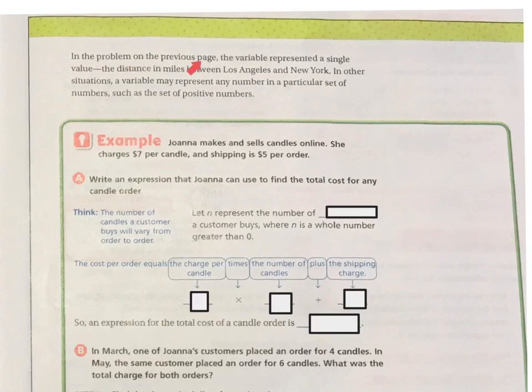In the problem on the previous page, the variable represented a single value, the distance in miles between Los Angeles and New York. In other situations, a variable may represent any number in a particular set of numbers, such as the set of positive numbers.